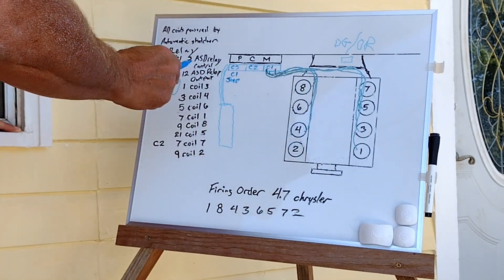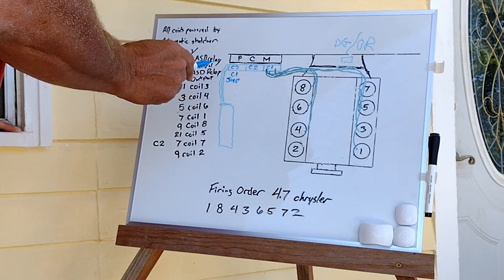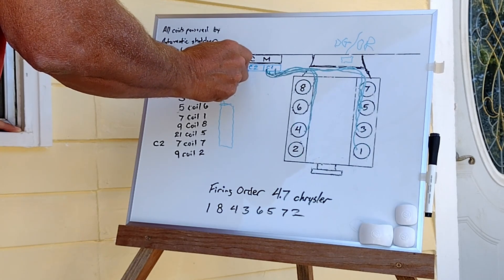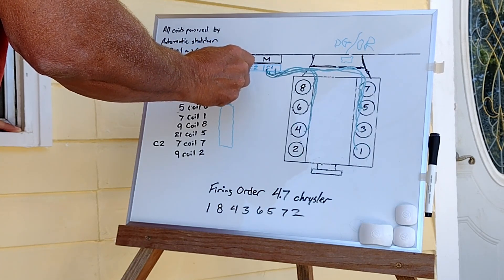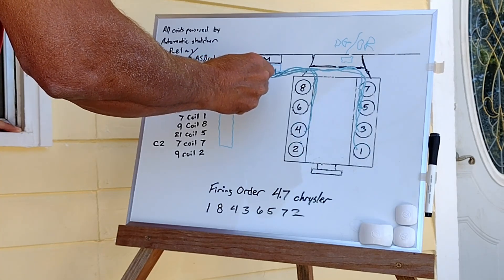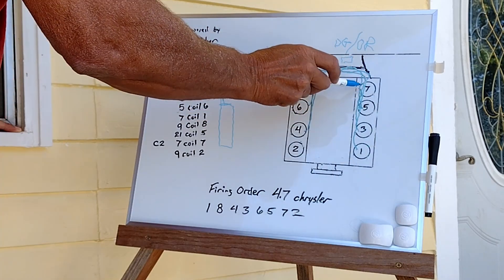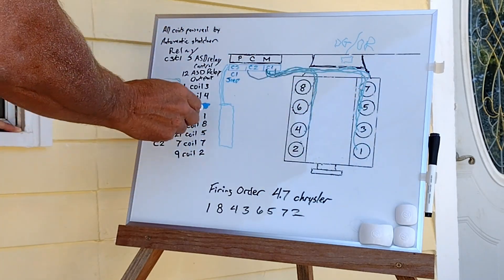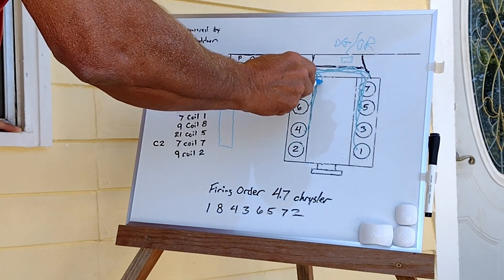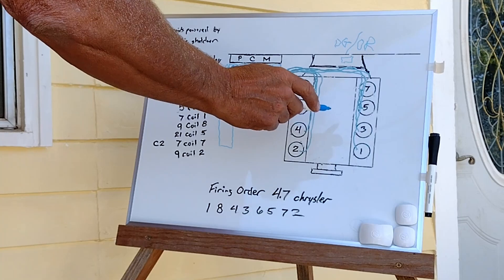So we have two cylinders yet that haven't been addressed, number seven and number two. Your number seven wire on your C2, and these are microscopic. You're going to have to get some magnifying glasses when you're looking at these to make sure that you've got the right wire. It's going to come over to coil number seven. Then you're going to take pin number nine from C2, and you're going to bring it all the way down to coil number two. That's got all of your coils addressed.